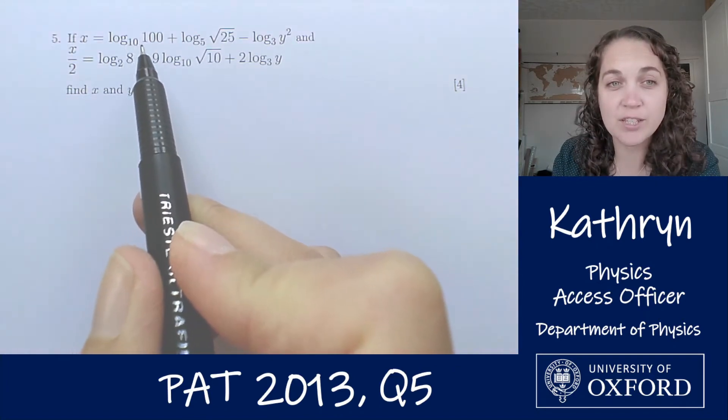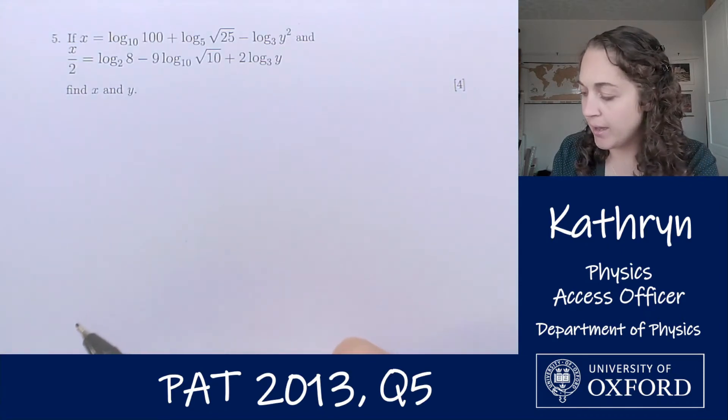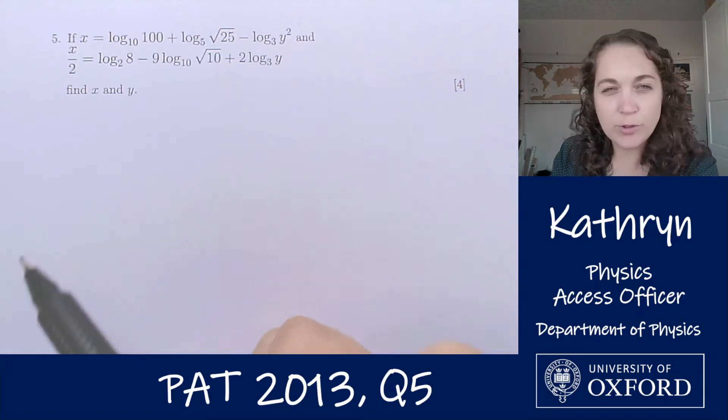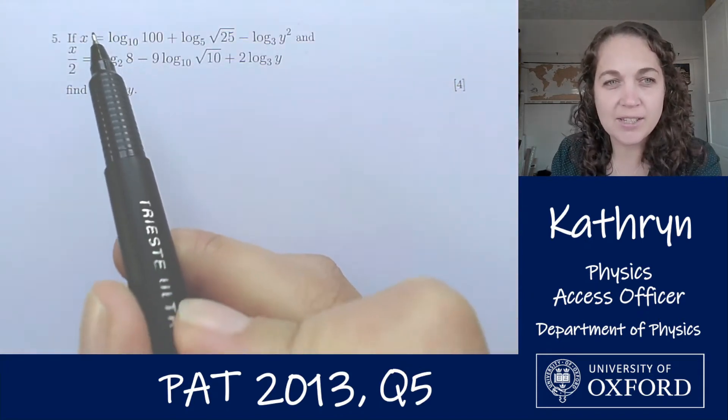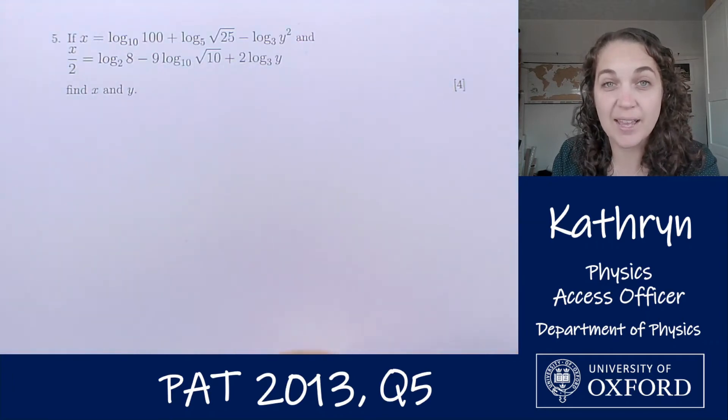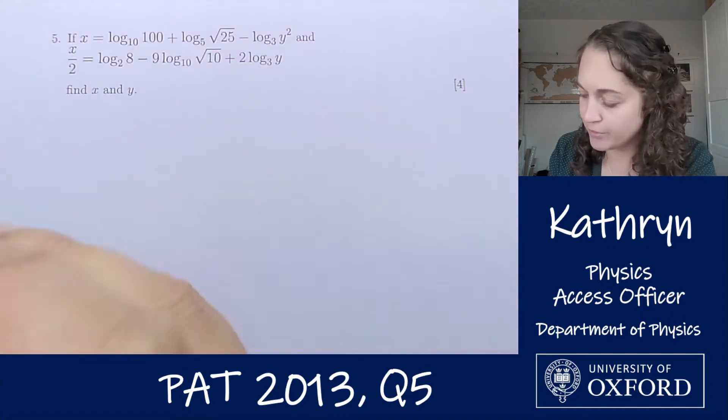So the first thing to note is that we've got logs with lots of different bases here, so we're going to have to handle each of these individually and then I'm expecting we're going to end up with a couple of simultaneous equations because we've got two equations that both involve x and y. Essentially the task is going to be to make these simple enough to work with. So let's start with the first one.